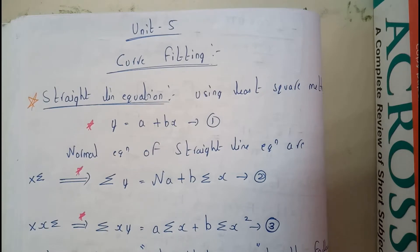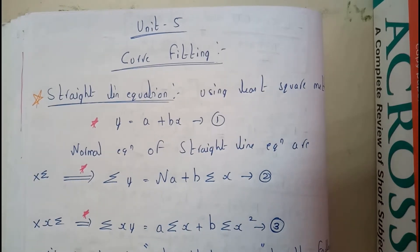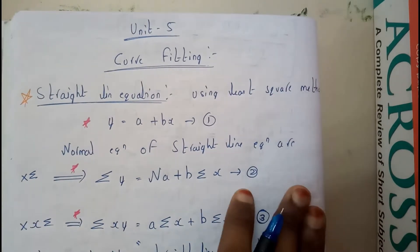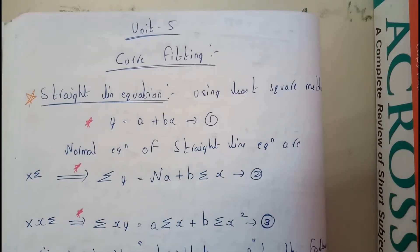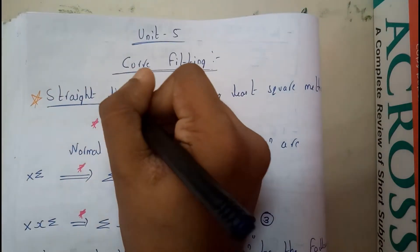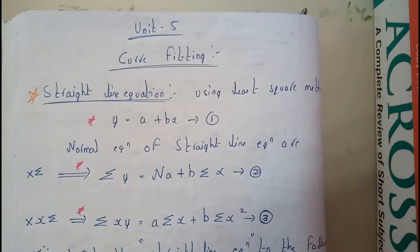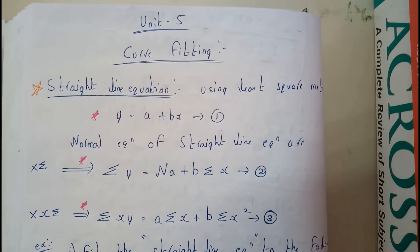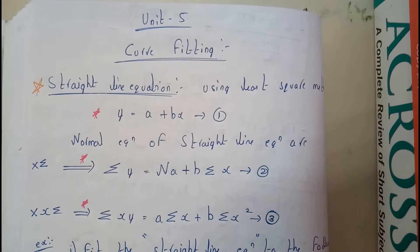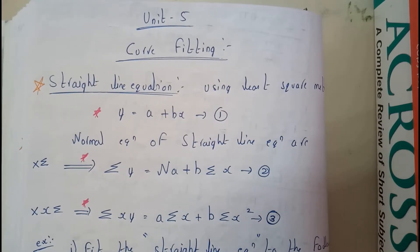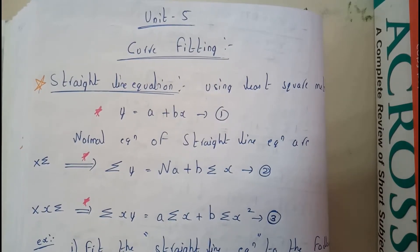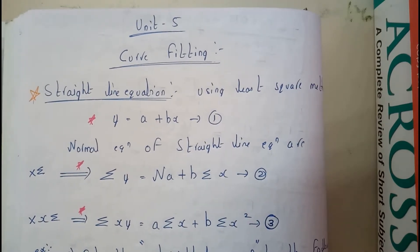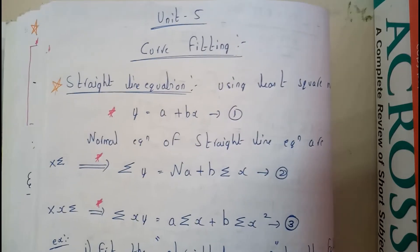This chapter is also really easy, so don't get tensed or anything like that. The first topic in this chapter is straight line equation. We will be using a method called the least square method. The question may be given like 'using straight line equation' or 'using least square method,' so once you hear the straight line word you need to remember only one equation.